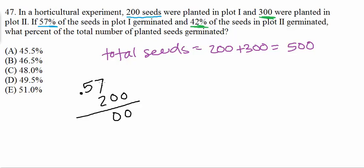So from here we have 2 times 7 which is 14. 2 times 5 which is 10. We add 1 to get 11. Now we have to move our decimal point 2 to the left. So now we know that we have 114 and that's from plot 1. So I'm going to underline that in blue.